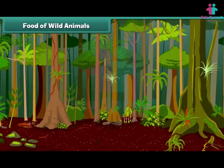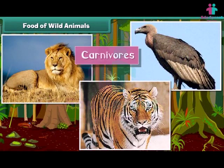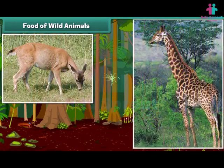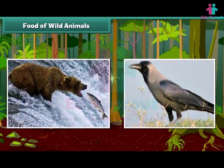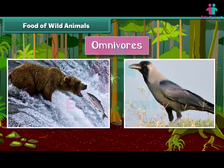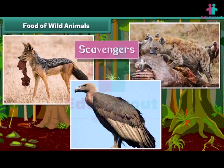Let us look at what wild animals eat for food. Lions, tigers, and vultures are carnivorous animals — they eat the flesh of other small animals. Deer, giraffe, and rabbits are herbivorous animals, as they eat only plants. Animals like bear and crow are called omnivorous animals, as they eat both plants and animals.